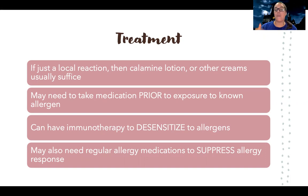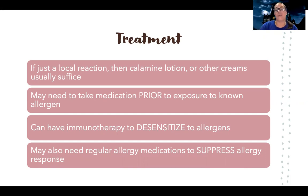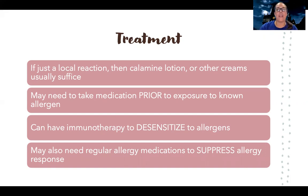Then there's immunotherapy — they find out what you're allergic to, mix it all up in a little vial, and start giving you tiny doses, slowly building up. That's how you can slowly desensitize — if you're allergic to something you can't avoid, it can make day-to-day life more manageable. For example, some people will do it because they're allergic to cats but married someone who has cats, so they get immunotherapy to desensitize.